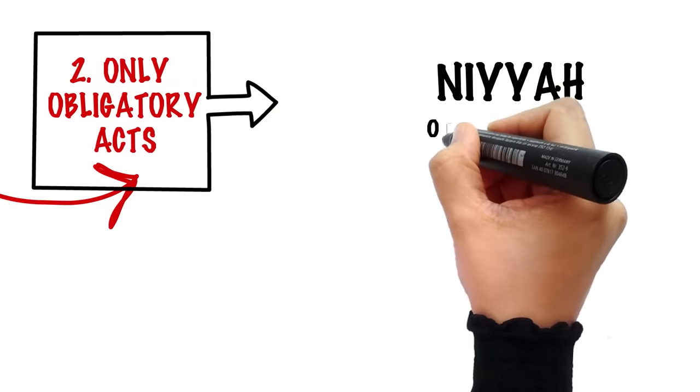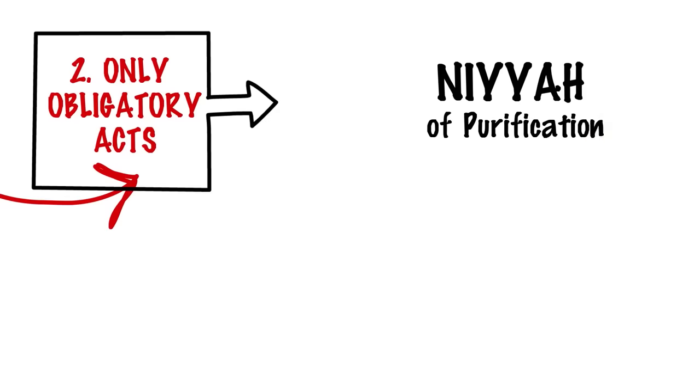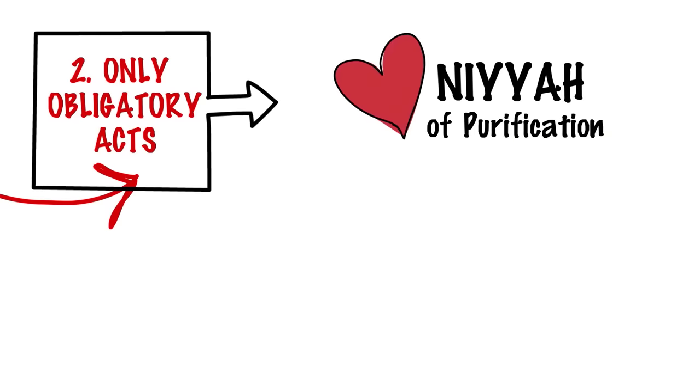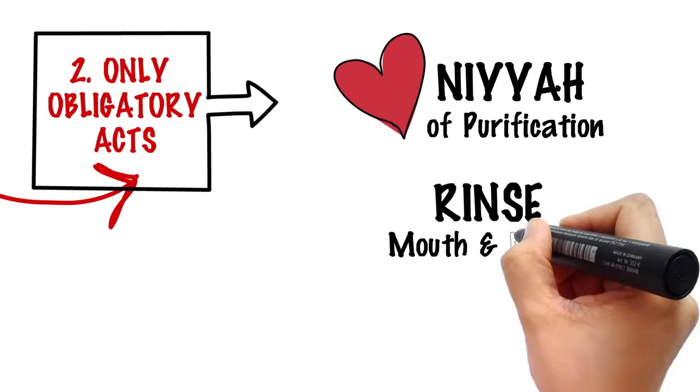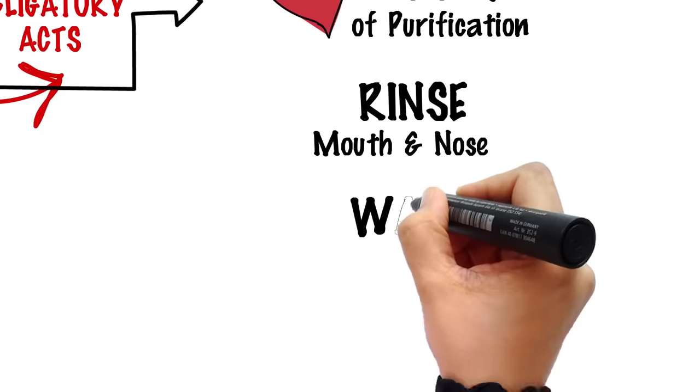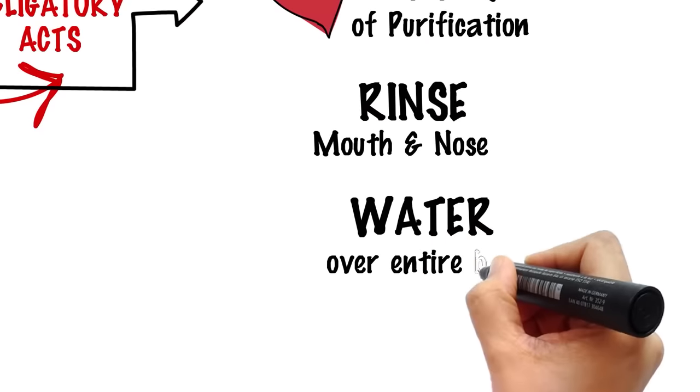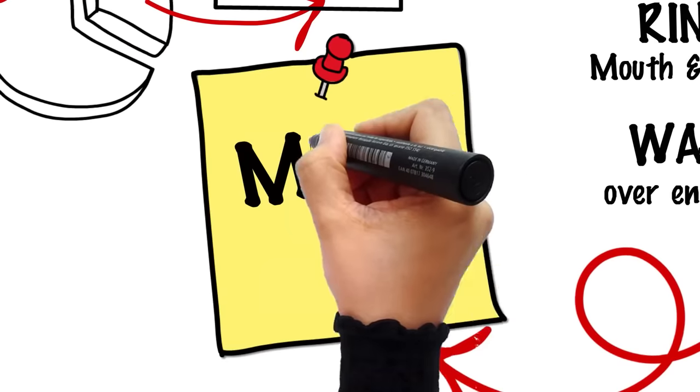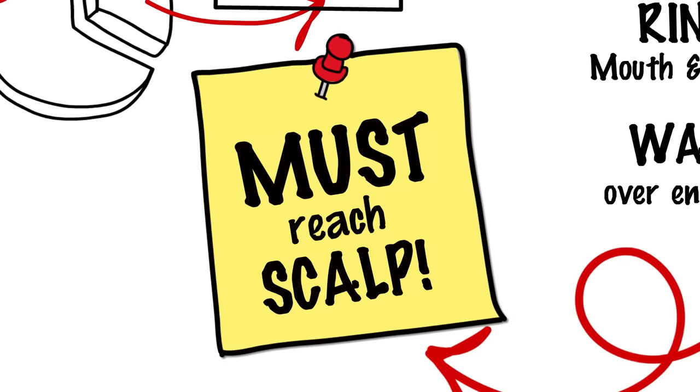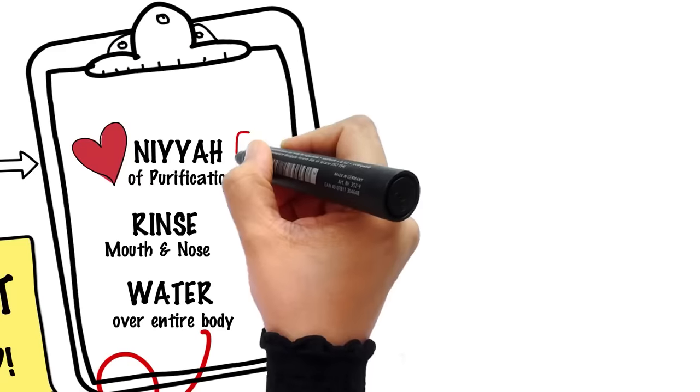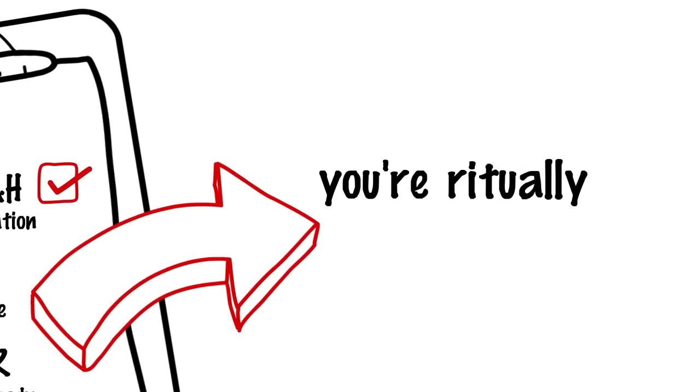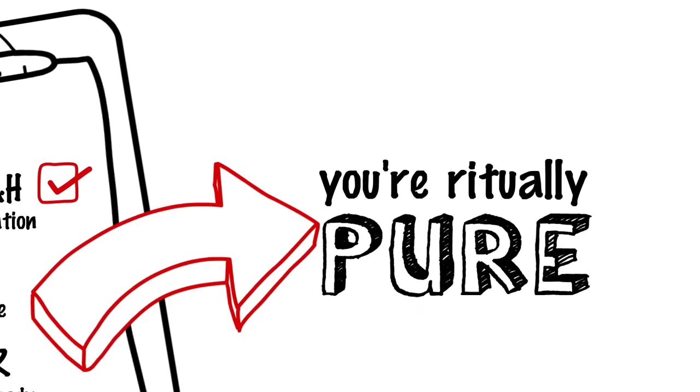So what are these obligatory acts of Gosil? A beforehand Niyya, intention that you are taking this bath to purify yourself from the major ritual impurity, rinsing your mouth and nose, and letting water run over your entire body at least once. Make sure it reaches every part of it, even your scalp under the thick hair. If you manage to do this much, then you have purified yourself from the major ritual impurity.